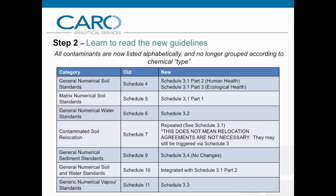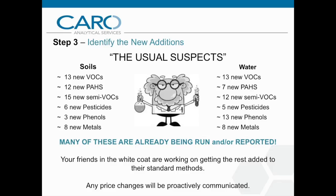Step three: identifying the new additions. As you move through the new schedules, you may notice a number of new analyte names. But don't worry — many of the new compounds fall into categories you are already familiar with, such as VOCs and PAHs. The good news is that many of these are already being run and/or reported, although you may not have reported them previously. In regards to packages and pricing, we are doing our best to cover as many contaminants of concern as possible and will do our best to ensure that prices change as little as possible. We will also be looking for feedback as to which new additions will be of particular interest to those in the field.